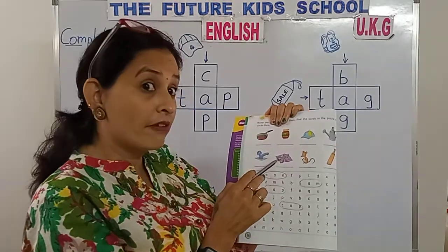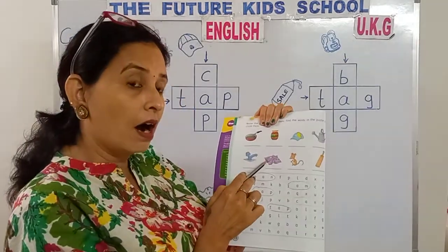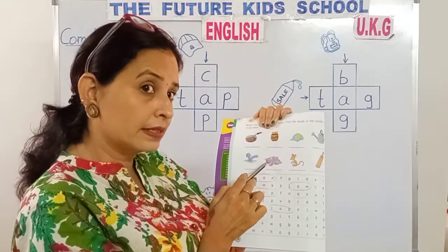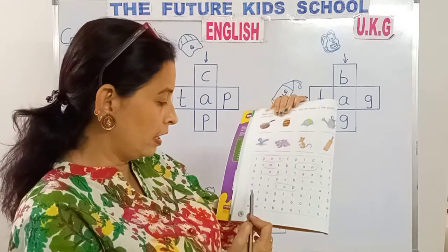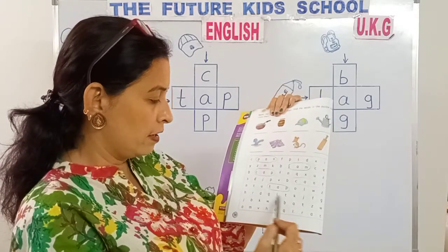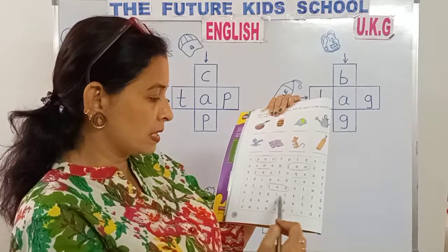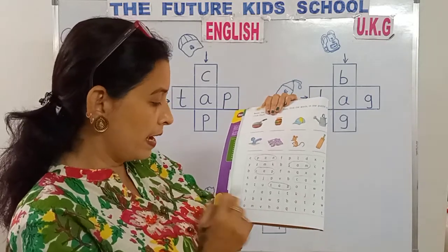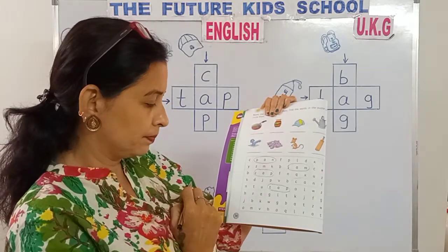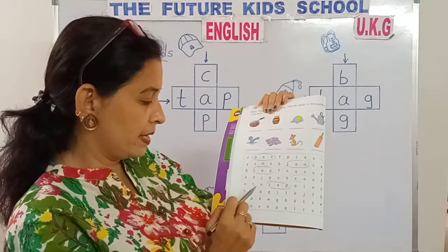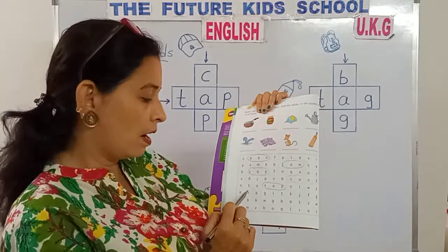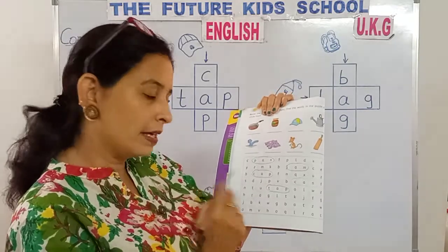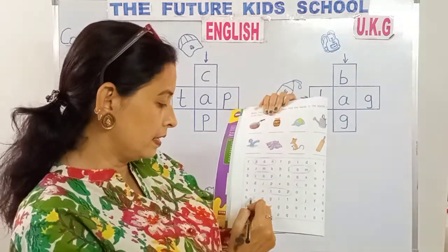This is a rag. R-A-G. Rag. Now look in this line, in these puzzled letters, children. R-A-G. Rag. Yes, here it is. R-A-G. Circle it.